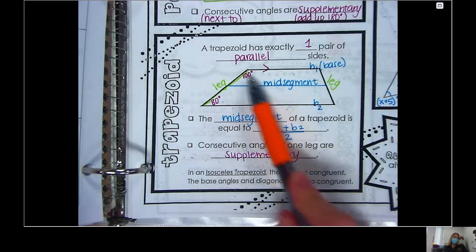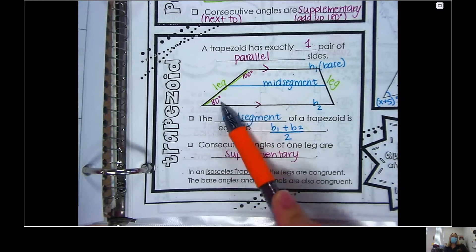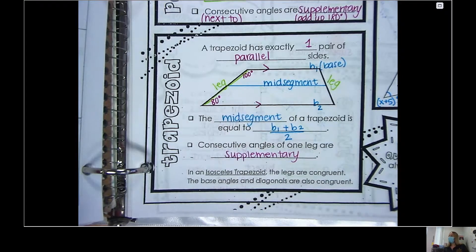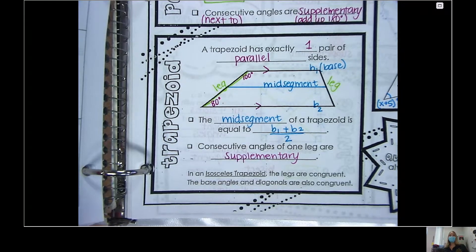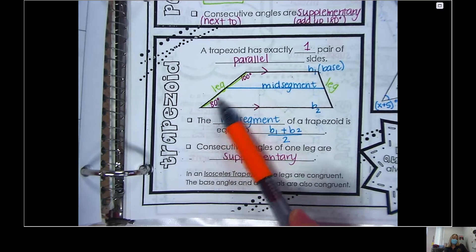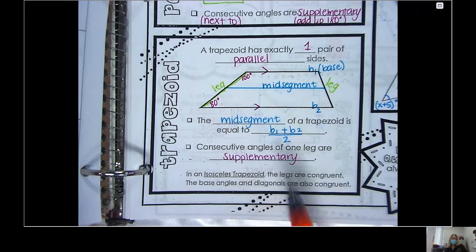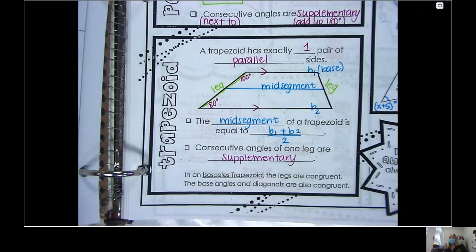The other thing we're also going to look at are the angles. What do you notice about these two angles right here? They are right next to each other — that's called consecutive. What else do you notice? What do they add up to be? 180. What's that called? Supplementary. So when they're on the same leg, they are supplementary — they're going to add up to 180.